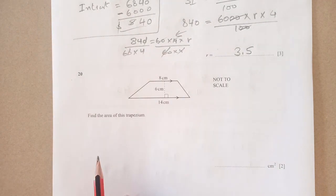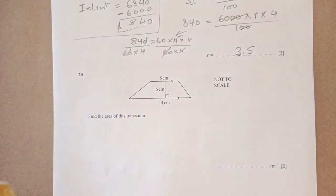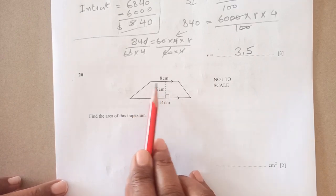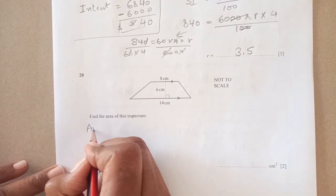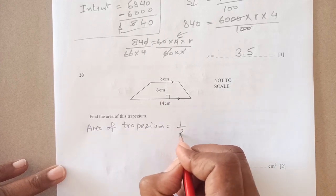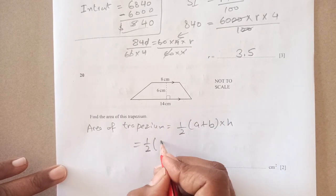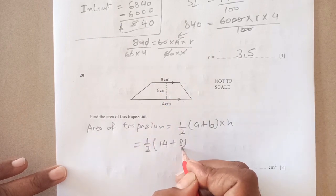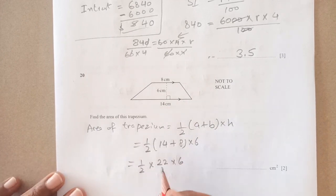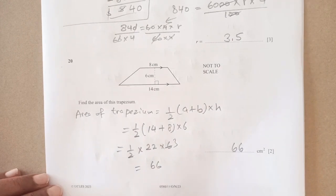Number 20: find the area of the trapezium. There's a trapezium with two parallel lines, one is 14, another is 8, and height is given as 6. It's very simple, we write down the formula. Area of trapezium is half(a + b) times height. So half times (14 + 8) times 6. Half times 22 times 6, 2 times 3, so this is 66 centimeters squared. Very simple question.